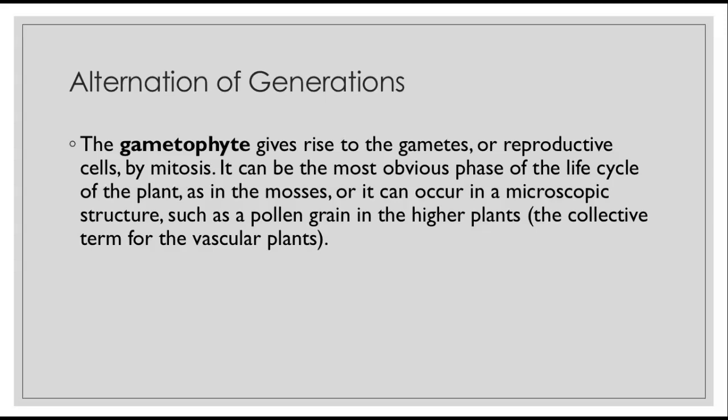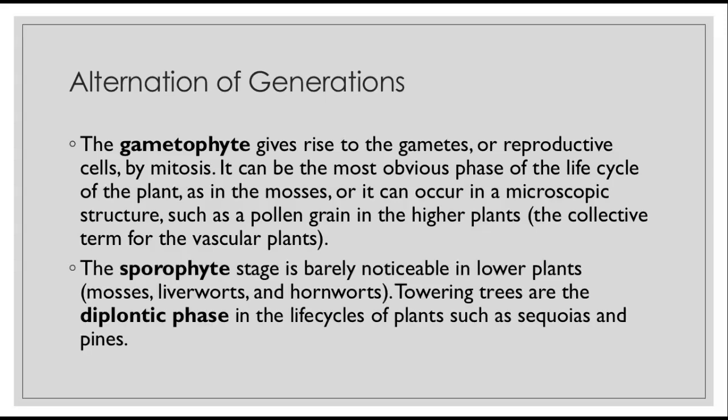The gametophyte gives rise to the gametes, or reproductive cells, by mitosis. It can be the most obvious phase of the life cycle, as in the mosses, or it can occur in a microscopic structure such as the pollen grain in the higher plants — the collective term for the vascular plants. The sporophyte stage is barely noticeable in lower plants like mosses, liverworts, and hornworts, but towering trees like sequoias and pines are actually the sporophyte, or diploid phase. Depending on the plant, the gametophyte or sporophyte could be large or small.